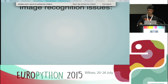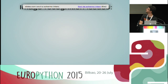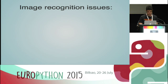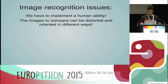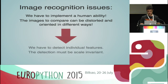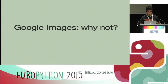The main issues in image recognition are the following. First of all, we have to implement a human ability — this is a very big challenge. The images to compare can be distorted and oriented in different ways, so we have to detect several features. The algorithm of detection will be scale-invariant. For our scope, we can find ready-to-use image recognition tools like Google Images. Let's see why we cannot use it.